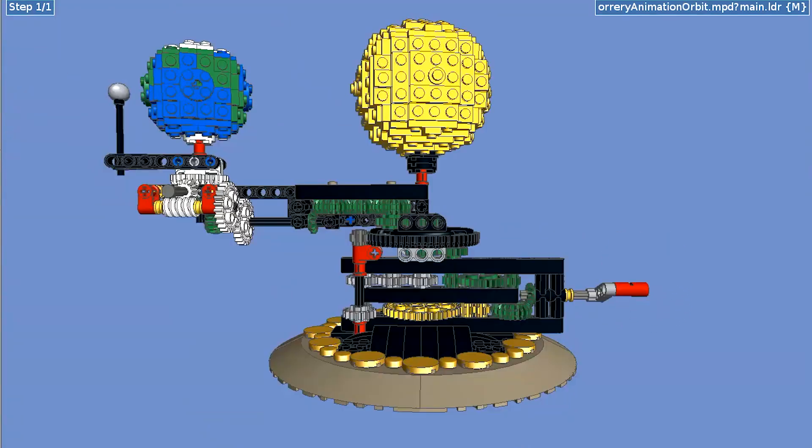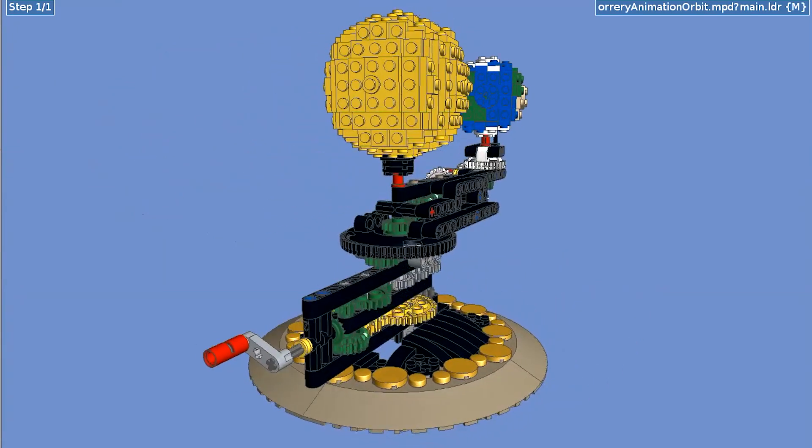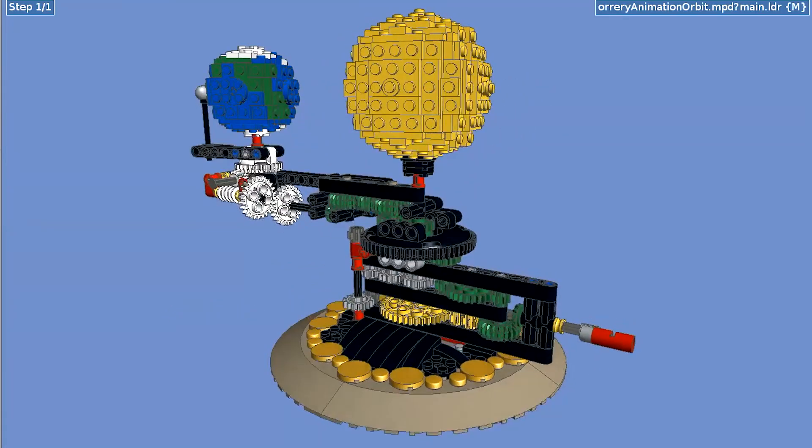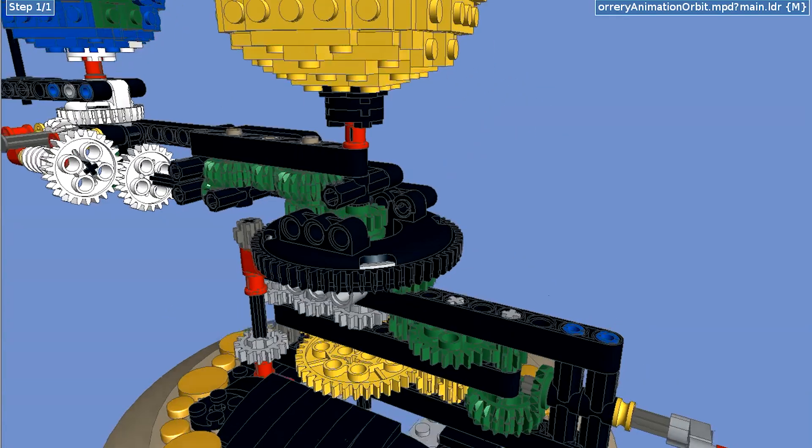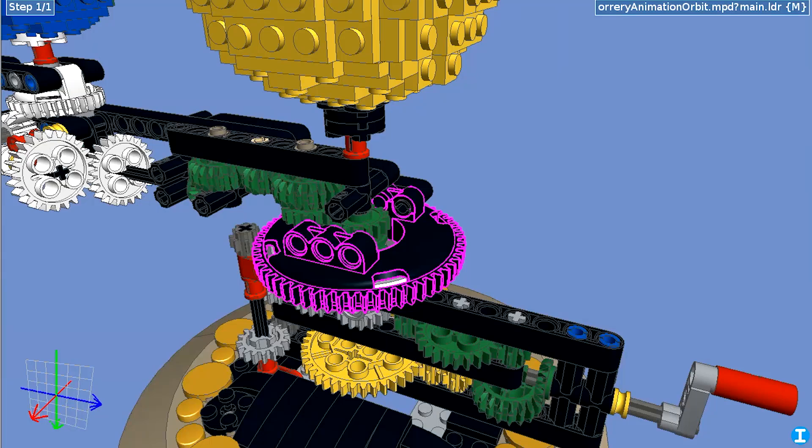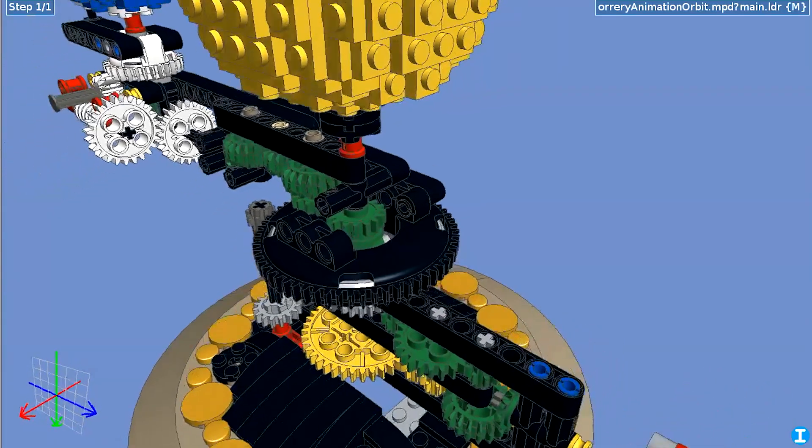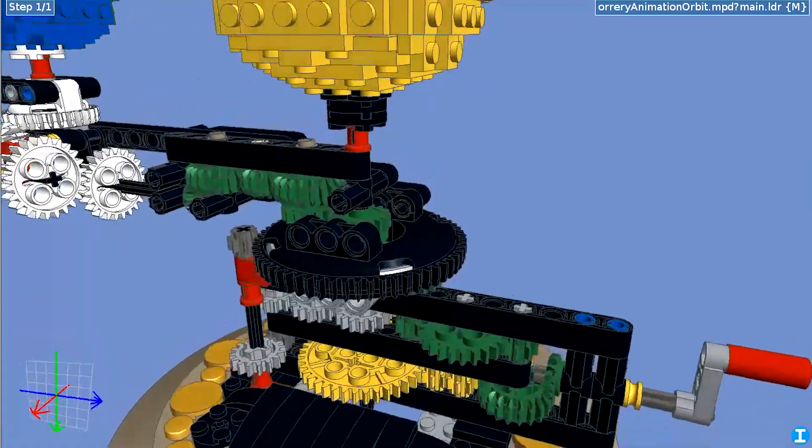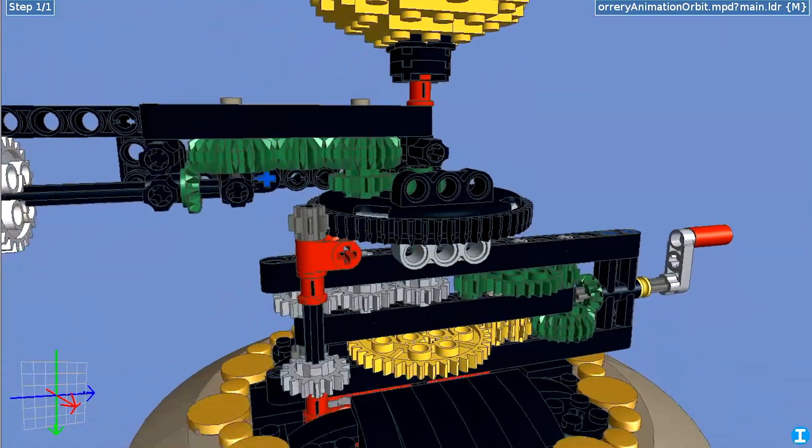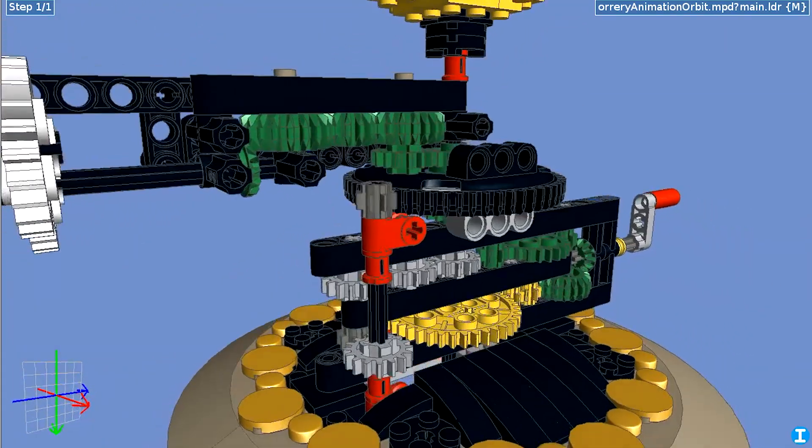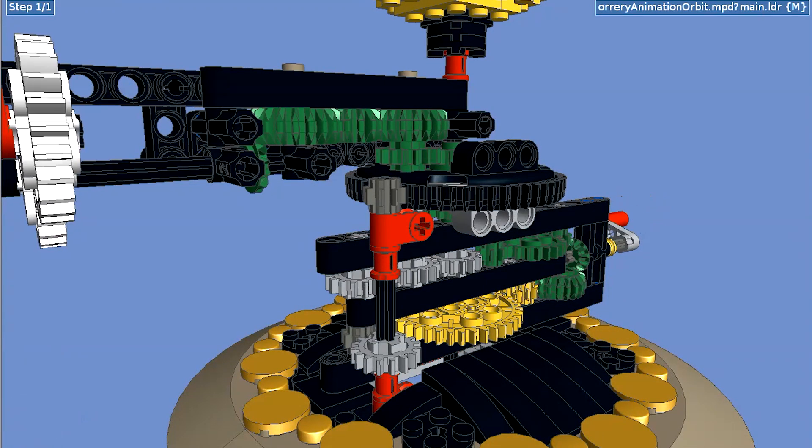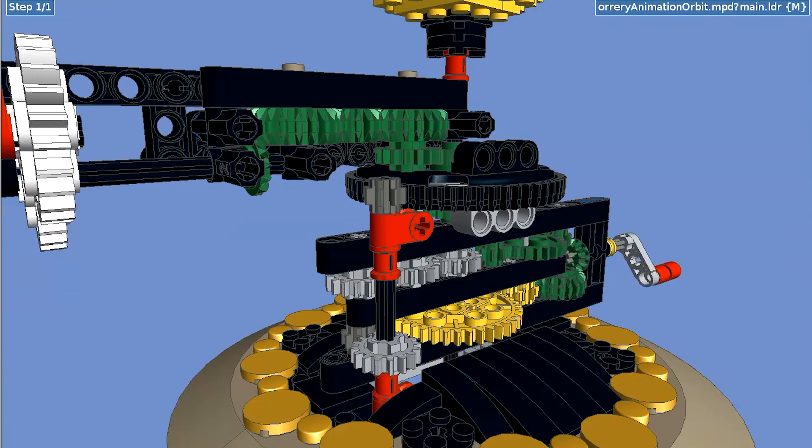And finally, we need to rotate the entire upper frame that the earth and the moon are connected to. And to do that, we are going to use this large turntable, which also has a hole in its center, allowing the gears and the axle rotating the earth, moon, and the sun to rotate independently of it.